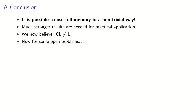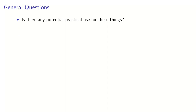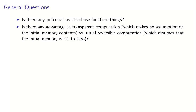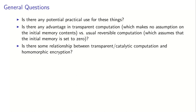Now for some open problems. Let's start with general questions. I don't actually know if there's any practical use for these things. I also noticed that this transparent computing and this CL computing — it's a reversible computation, but it doesn't make the assumption that the initial contents of the memory are set to zero. So it's a kind of more powerful slash more restricted form of computation, and I don't know if there's some advantage to having this kind of restriction. A question that has come up for me and my co-authors several times, and we haven't managed to establish a clear connection but our intuition says it should exist: is there some relationship between this transparent catalytic computation and homomorphic encryption?